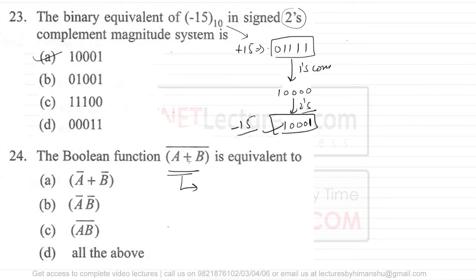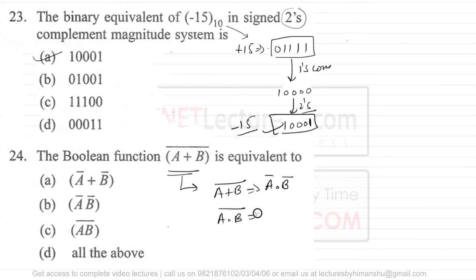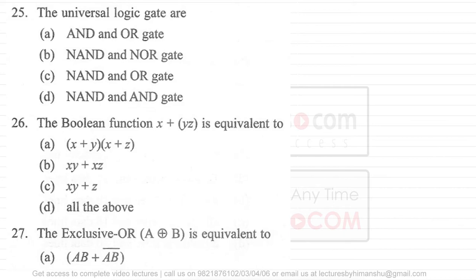Question 24 asks which boolean function is equivalent to a given expression — this is directly applying De Morgan's law. De Morgan's law states: (A + B)' = A' · B', and (A · B)' = A' + B'. Applying this, option B is the correct answer for question 24.